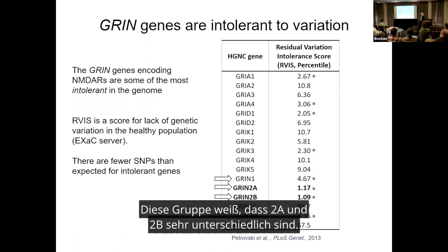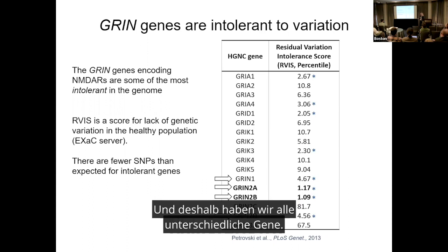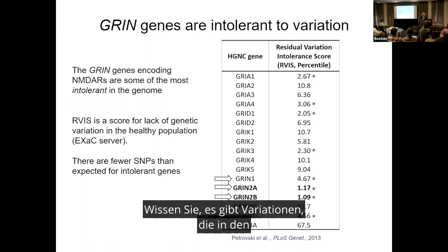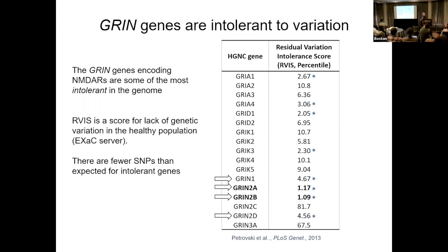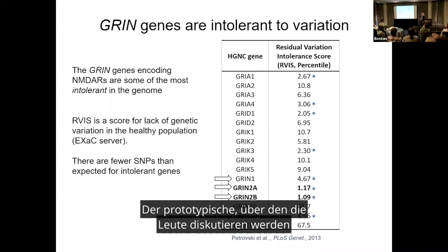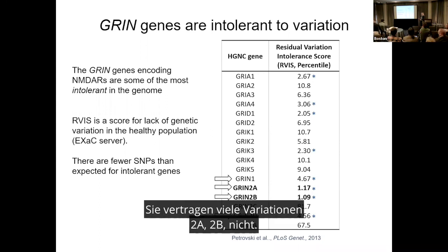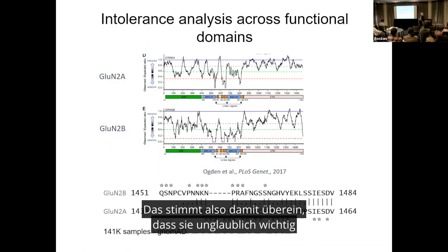This group knows GluN2A and GluN2B are highly invariant — very intolerant of variation. All of us have different genes, and some genes tolerate variation really well, like olfactory receptors. GluN2A and GluN2B do not, and that's consistent with them being incredibly important.